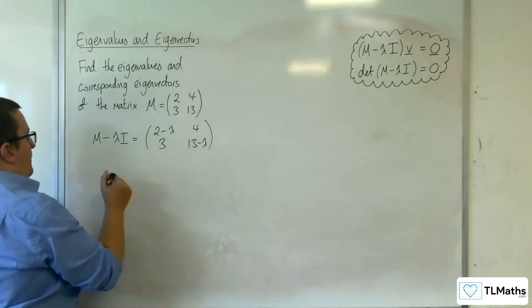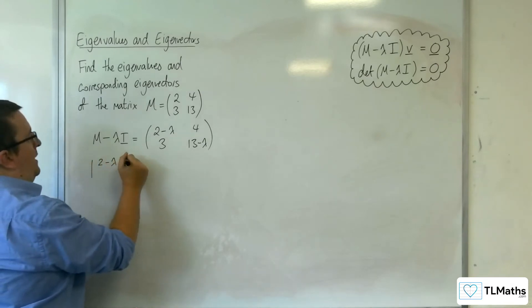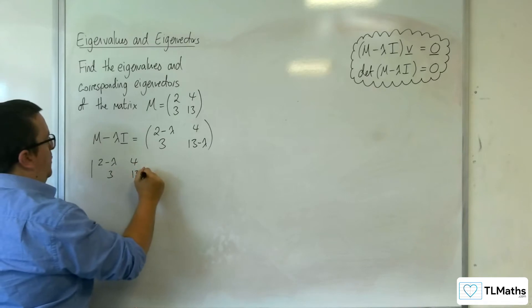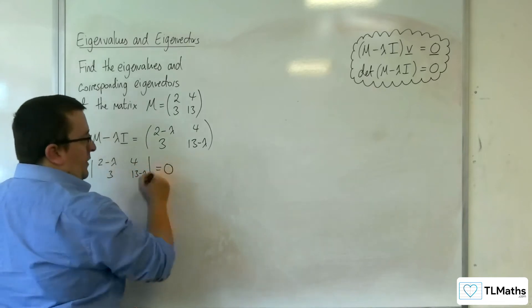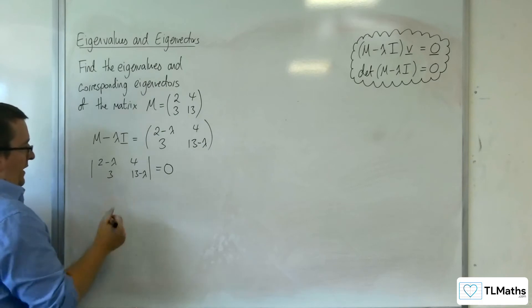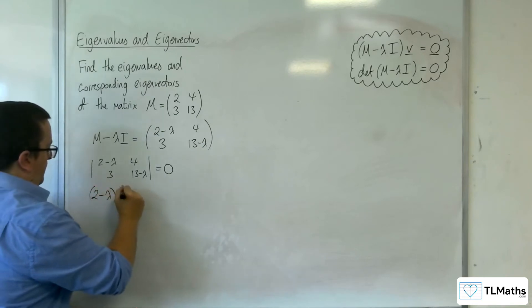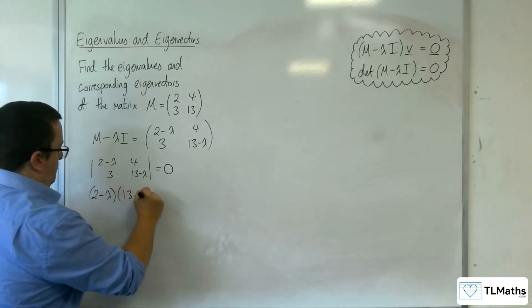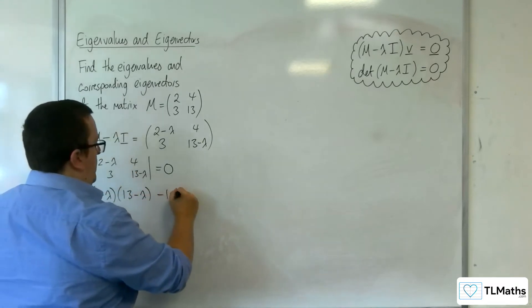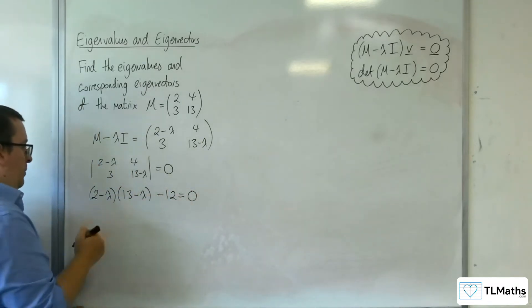The determinant of this will be equal to 0. So 2 take away lambda, 4, 3, 13 take away lambda equals 0. So we're going to get 2 take away lambda times 13 take away lambda, take away 4 times 3, so take away 12 equals 0.